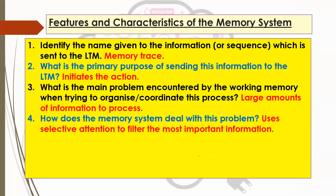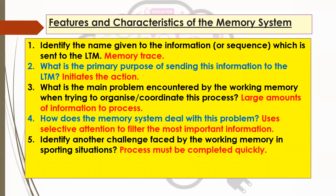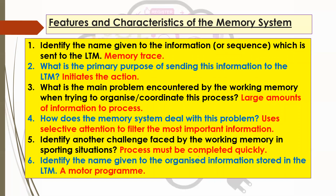How does it deal with or help alleviate that problem? It uses the process of selective attention — filtering out what's most important initially and disregarding anything it thinks is not most important, so the subsystems aren't having to deal with all the extra irrelevant information and can just focus on the most important parts. The other challenge links in: the process has to happen so quickly. Large amounts of information plus the fact it has to be done so quickly — those are the challenges faced by the memory system. And the name given to the organised information stored in the long-term memory is a motor program.